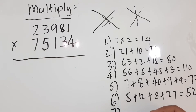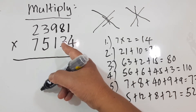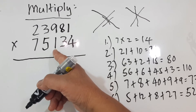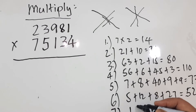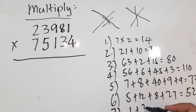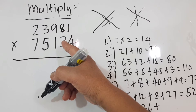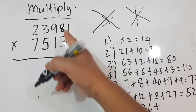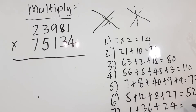Step 7: We have the third column now. 1 times 1 is equal to 1, plus 4 times 9 which is equal to 36, plus 8 times 3 which is equal to 24. So 1 plus 36 is 37, plus 24 equals 61.